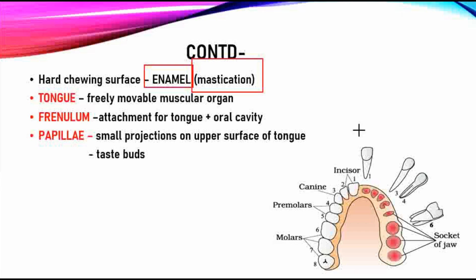Looking at the structure of a tooth, the visible upper portion is called the crown. Below that is the neck part, which is surrounded by the gums. The lower embedded portion is the root. Enamel is the hardest substance in the tooth. A condition called pyorrhea refers to an infected gum or tooth socket.